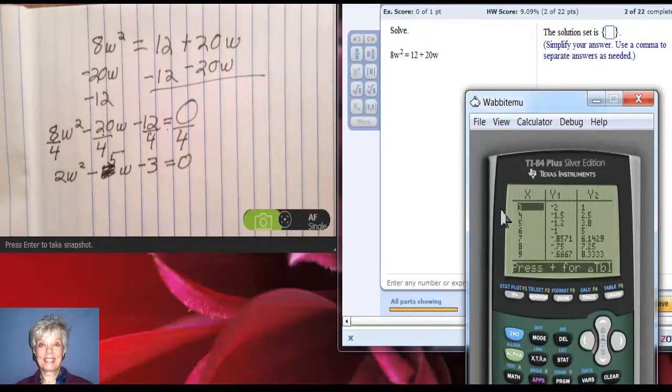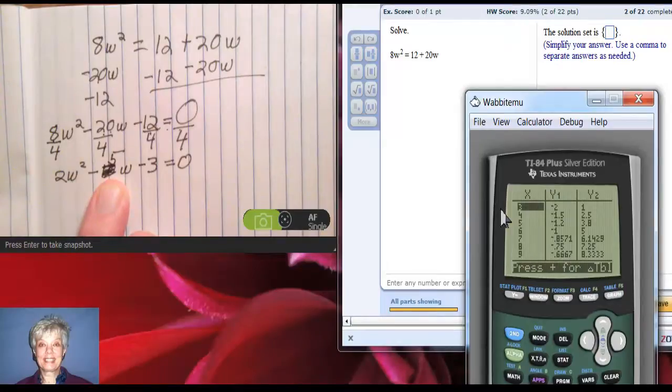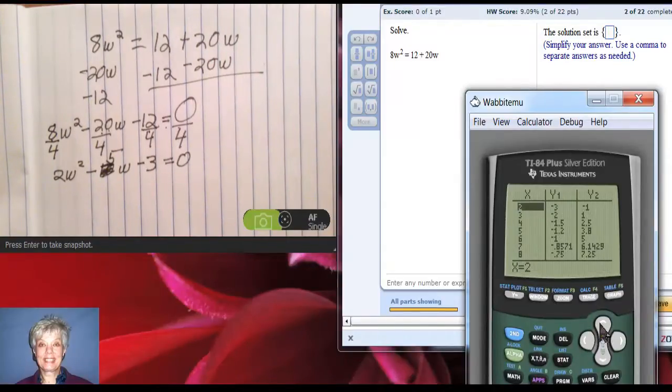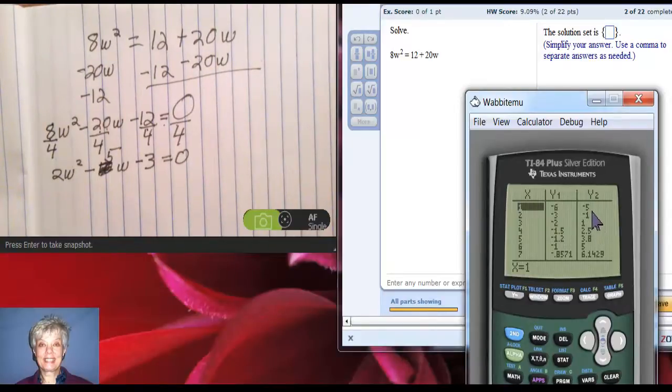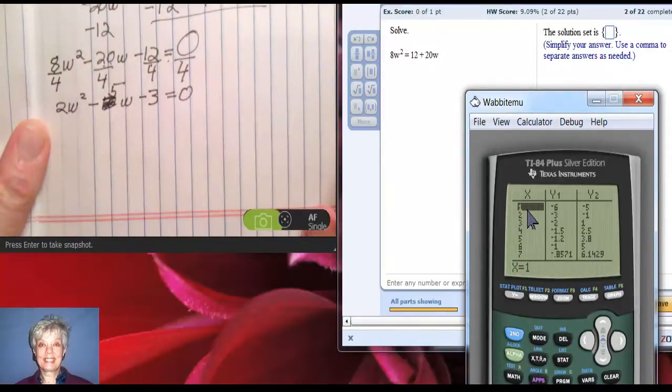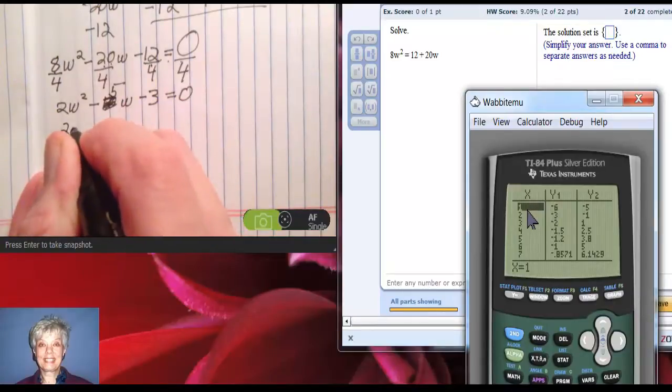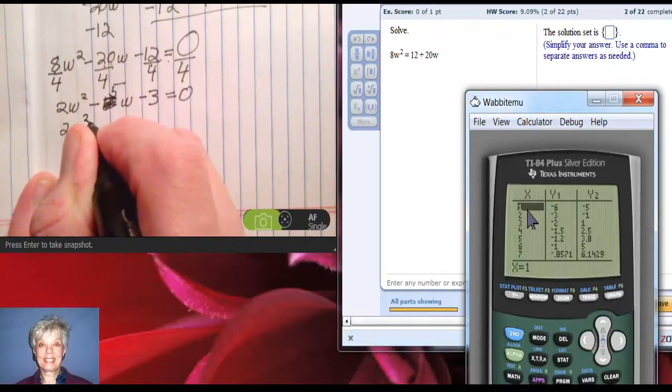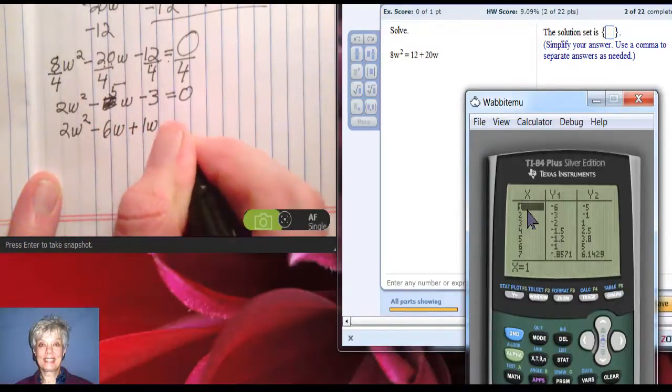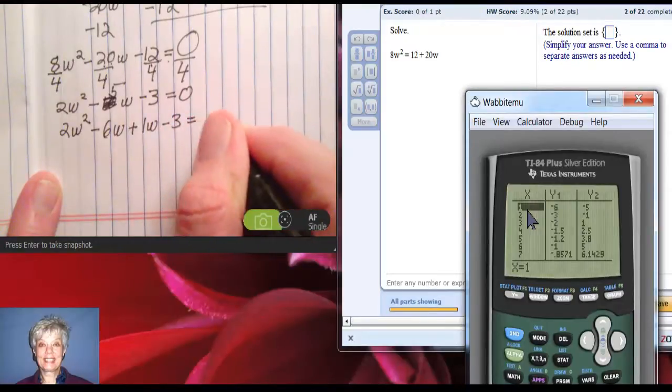Second graph. And our b number now is -5, with a minus sign in front of it, negative 5. So I am going to go through here looking for negatives. There's -5. And -5 is accompanied by -6 and 1. So that means I'm going to write 2w² - 6w + 1w - 3 = 0.